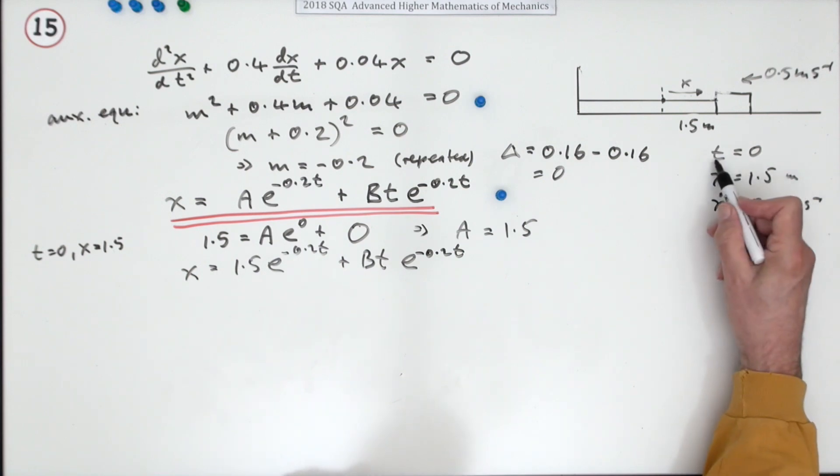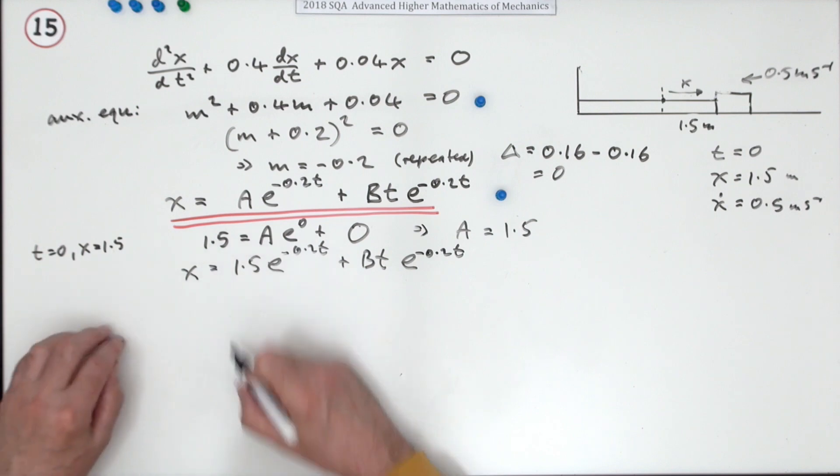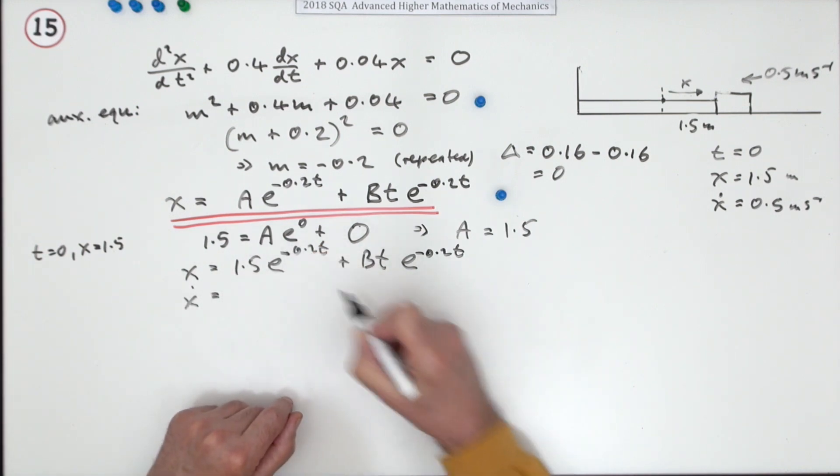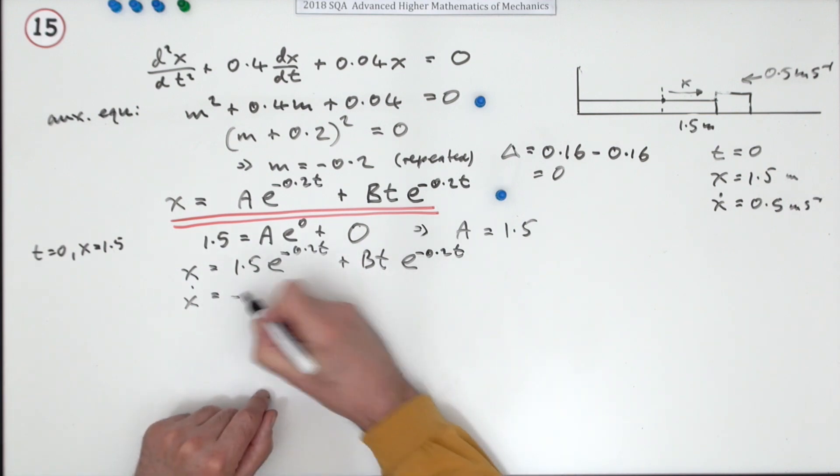Negative 0.2t plus Bt times e to the negative 0.2t. Now to use the other initial condition, which is at time 0 the velocity is negative 0.5, we'll need to differentiate this. So that's going to be... that's a negative, so that'll be negative...